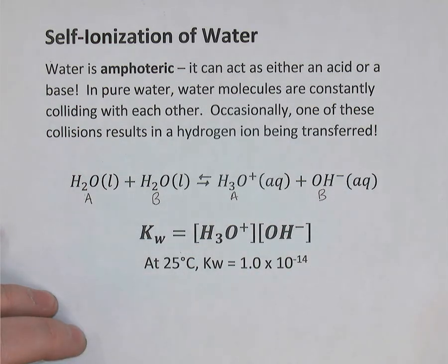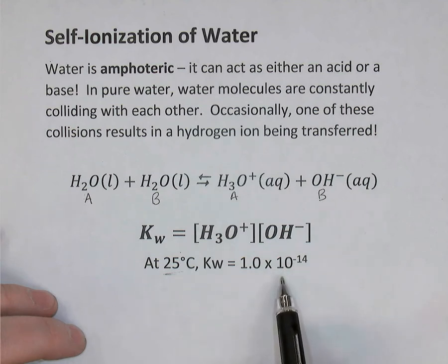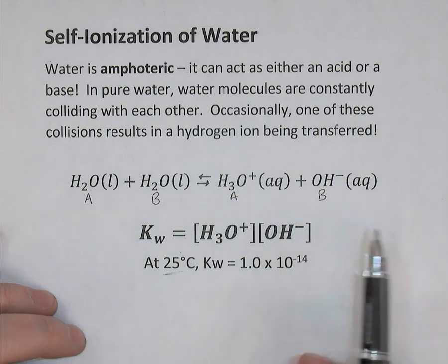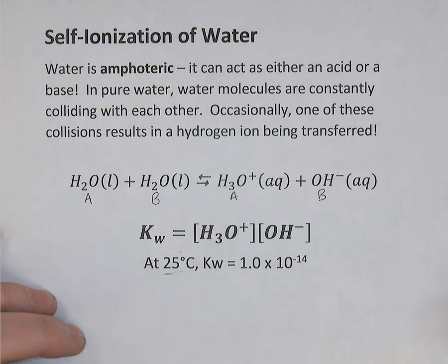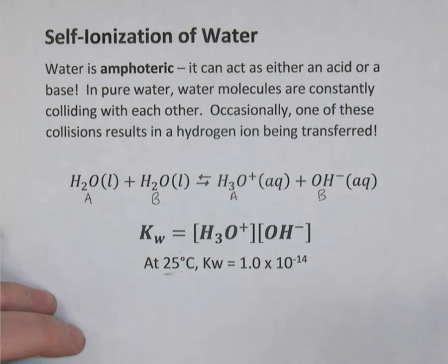Now at 25 degrees Celsius, the temperature where we'll do most of our calculations, the KW value is 1.0 times 10 to the minus 14. Now this is an equilibrium constant. You remember from our equilibrium unit that when the KC value, in this case a KW, is small, it means that the reaction makes very little product. Most of the reactants are unreacted. So the reaction is reactant favored. So the fact that this is such a tiny number, 1.0 times 10 to the minus 14, means that this reaction really happens only a tiny, tiny bit.